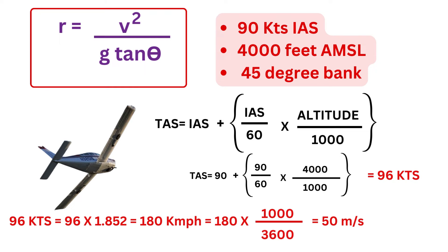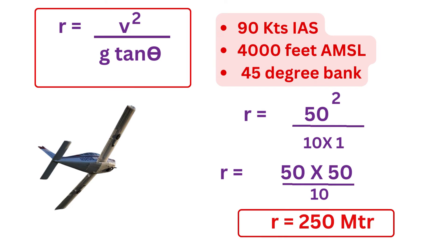Putting these values into the formula, now rounding off the values of g to 10 meter per second square and the value of tan 45 being 1, we get the radius of turn to be 250 meters. So a Cessna 152 at 90 knots at 4,000 feet AMSL turning with 45 degree bank will be able to turn with a radius of 250 meters.